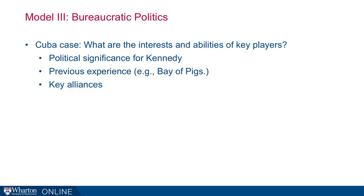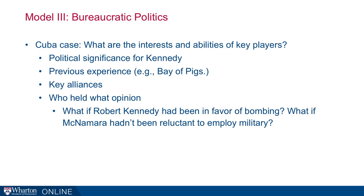There were also key alliances within the organization. Probably the most important was between Kennedy and his brother Robert, the attorney general. What if Robert Kennedy had been in favor of bombing? Would that have made a bigger difference than the advocates who did exist — typically military figures? Kennedy was closer to his brother than to military leaders, so the fact that Robert Kennedy was inclined against bombing probably made a difference. Similarly, McNamara, the secretary of defense, was reluctant to employ the military the way actual military leaders wanted. The dispositions and alliances of individuals made a very big difference.